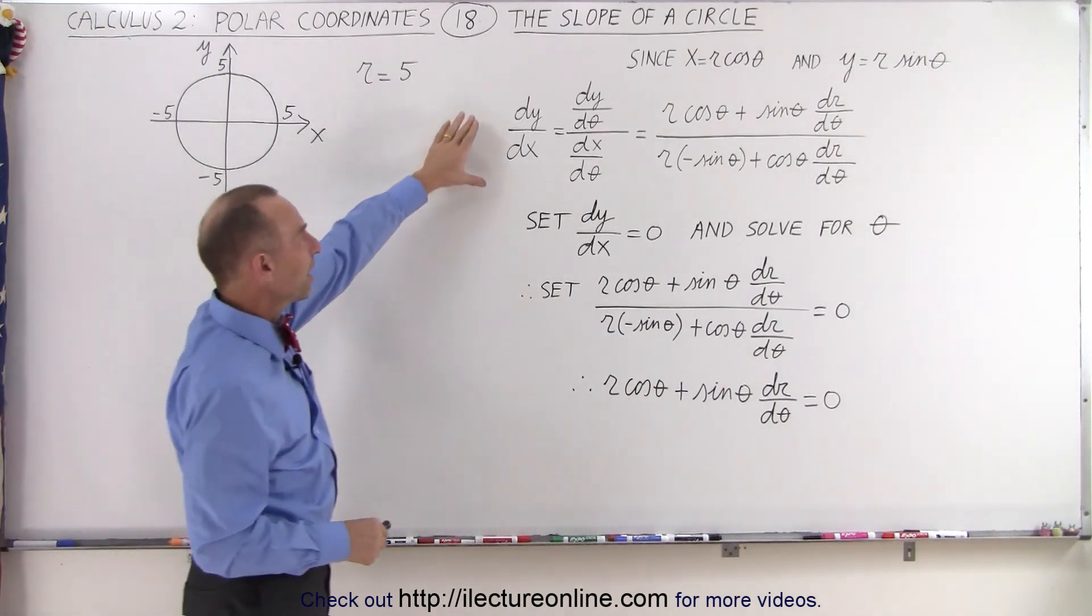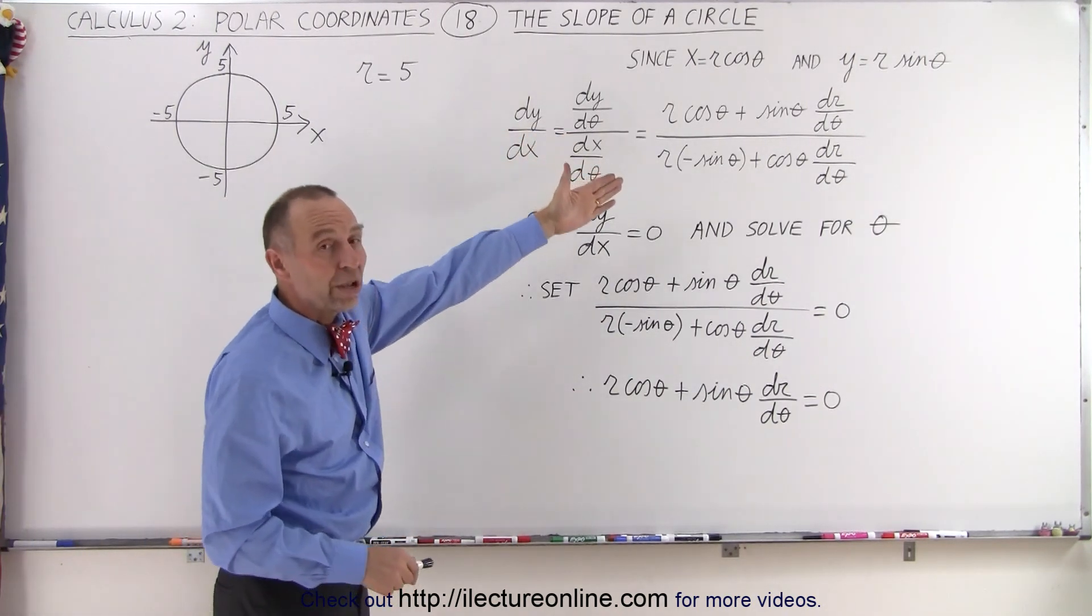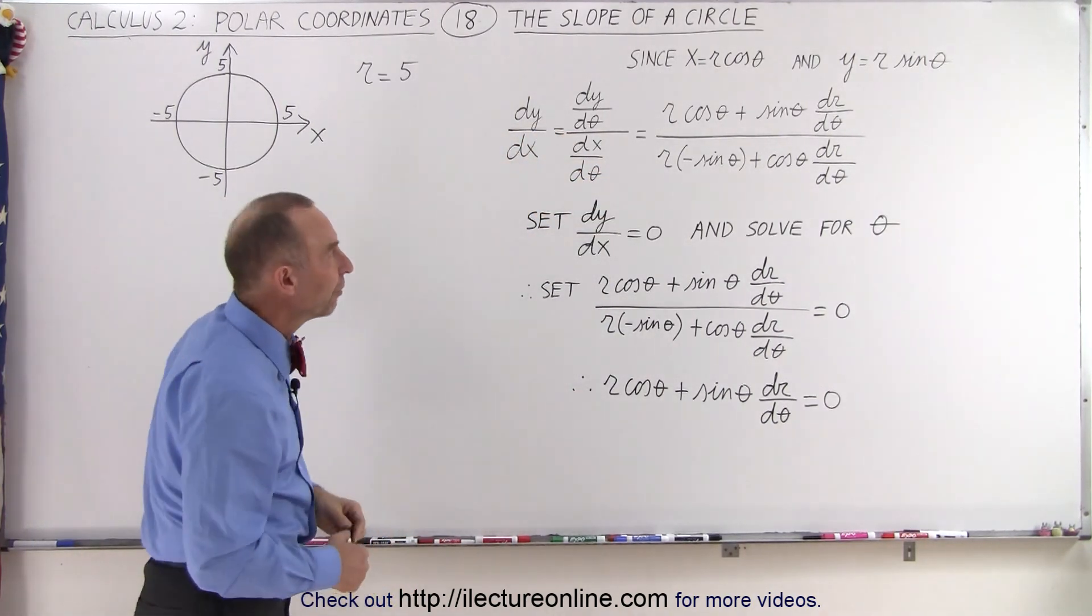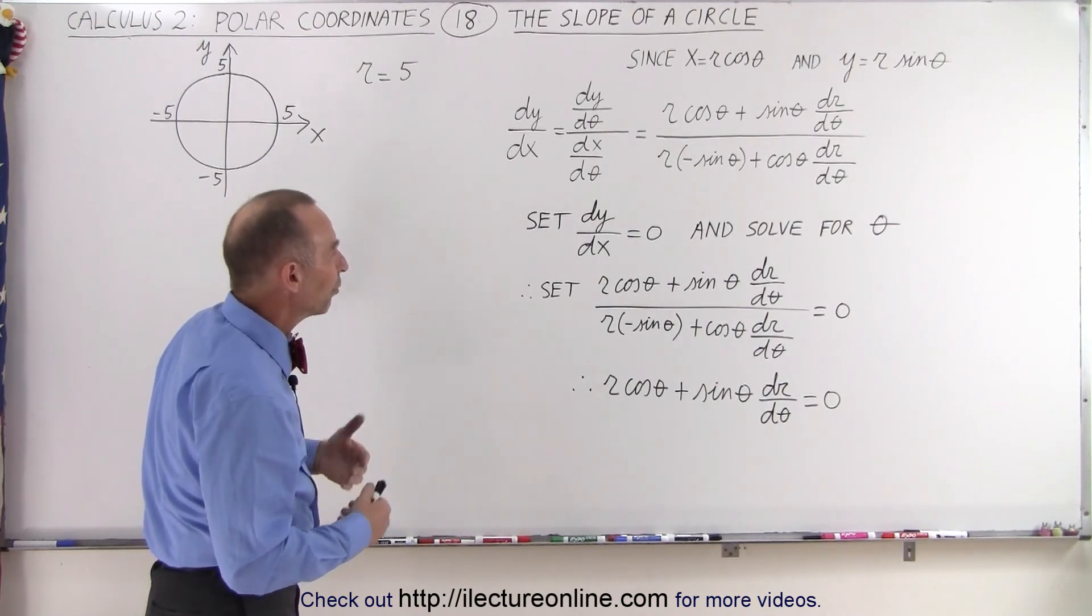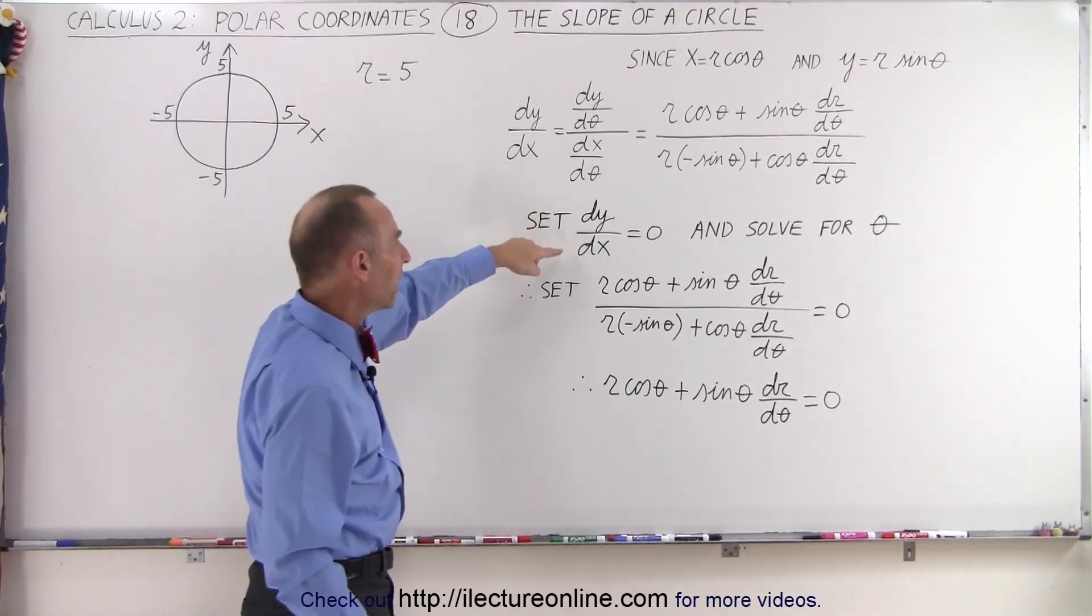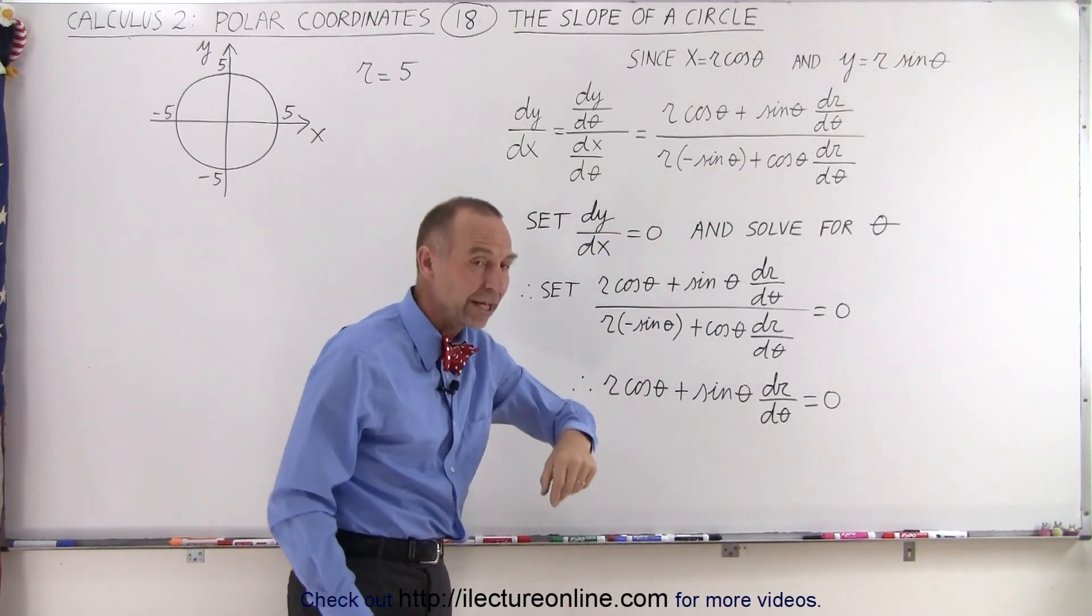So again, we use the same dy/dx, the general equation of the derivative of a polar equation. Then, to find where the slope is equal to 0, we set the dy/dx equal to 0 and solve for theta.